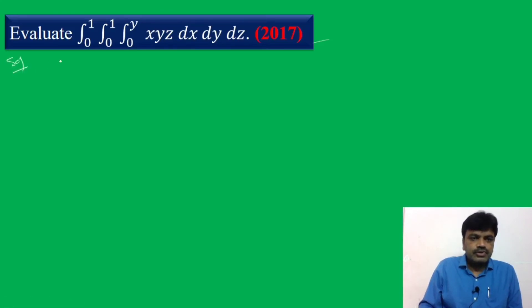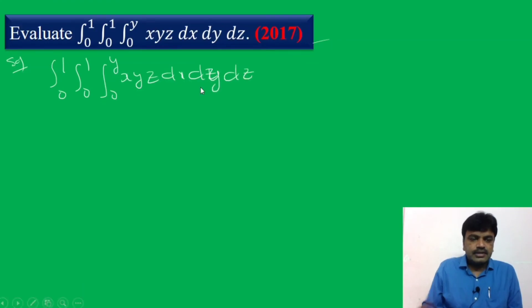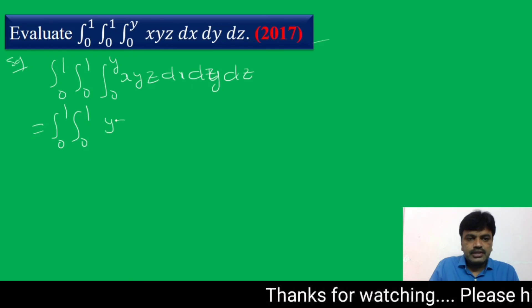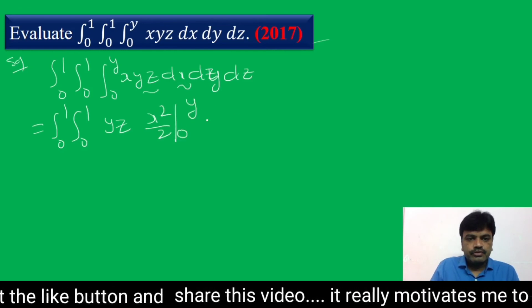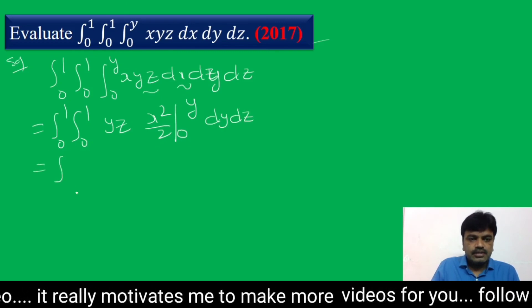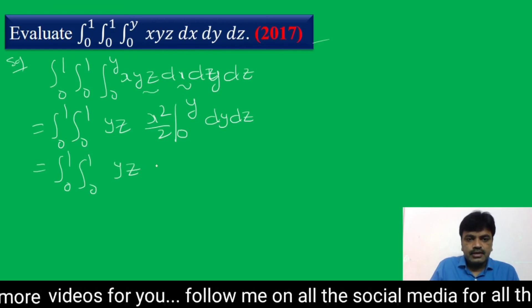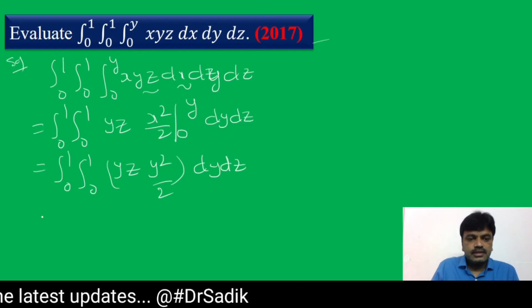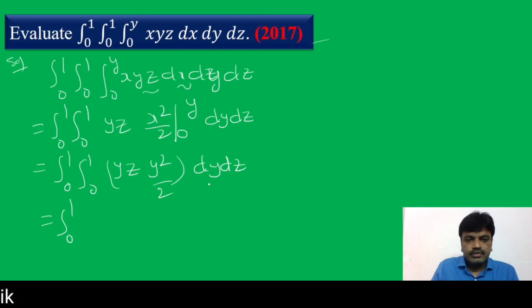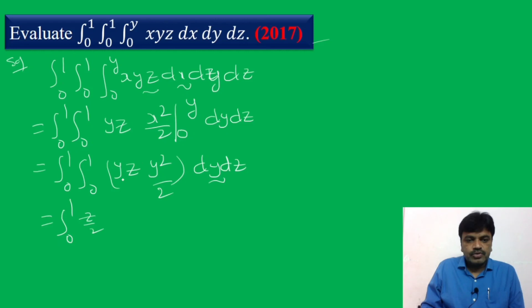Write down the solution: integral 0 to 1, integral 0 to 1, integral 0 to y, x y z dx dy dz. That is equal to integral 0 to 1, integral 0 to 1 — integrating with respect to x, y and z are constants — so integral of x dx is x-squared by 2, between limits 0 to y, into dy dz. Substituting limit y gives y-squared by 2; lower limit gives 0. So we get integral 0 to 1, integral 0 to 1, y z times y-squared by 2, dy dz.